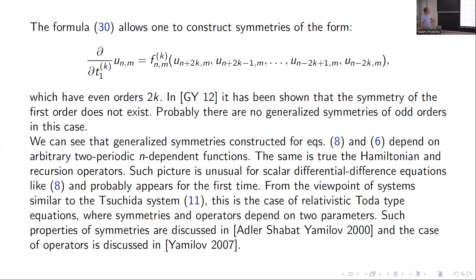And this term is for the other generalized type symmetry — it again contains an arbitrary two-periodic function. So in this way we can compute other generalized symmetries, and probably no other generalized symmetries exist in this case. In even order, there exist two generalized symmetries, and this situation is very unusual for a scalar equation.